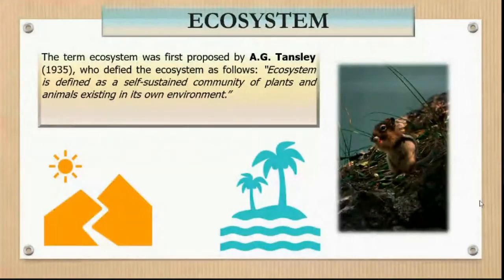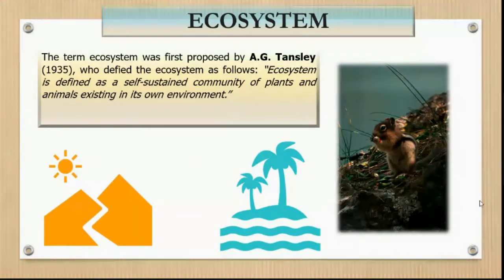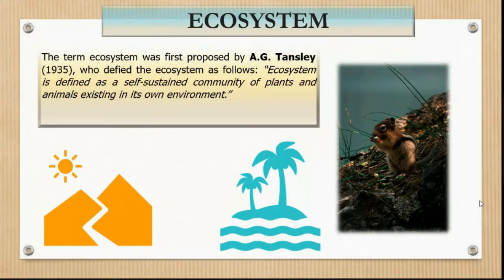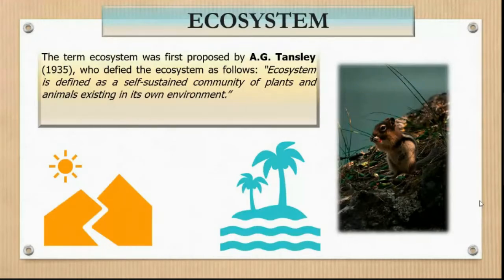The term 'ecosystem' was proposed in 1935 by A.G. Tansley, who defined an ecosystem as a self-sustaining community of plants and animals existing in an environment. To understand this, we first need to understand what a system is. A system is anything which has a boundary, inputs, and outputs. An ecosystem has an imaginary boundary that differentiates one ecosystem from another — a forest ecosystem differs from a grassland, which differs from a desert or aquatic ecosystem.